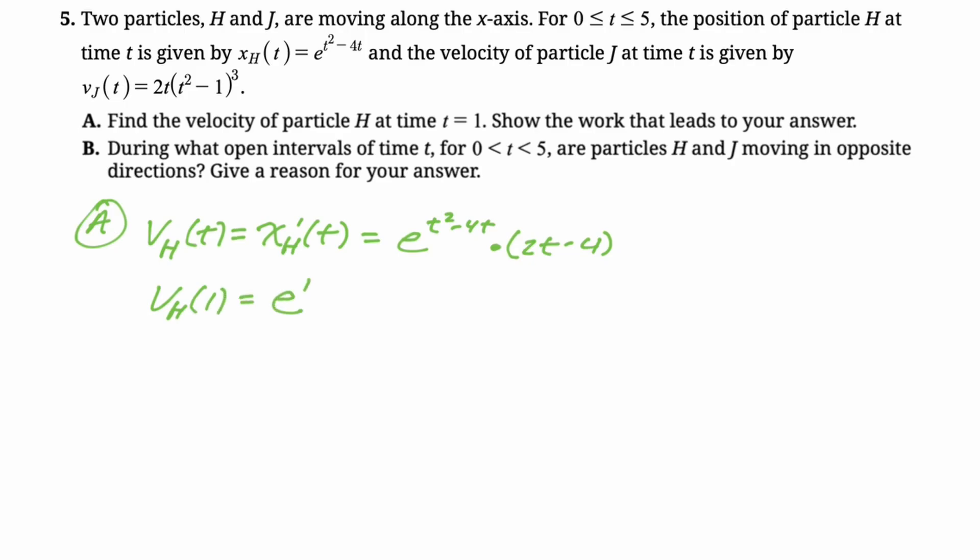So v_H(1) is going to be e^(1-4), and then the quantity 2-4. You could actually leave that, but I think it's easy enough to simplify. You should really leave it, though. Over the years, I've probably lost a lot of points by simplifying things I didn't need to.